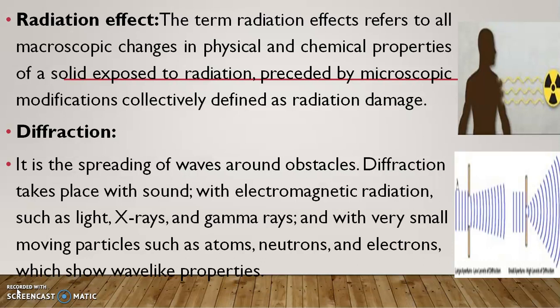The next term is radiation effect. The term radiation effect refers to all macroscopic changes in physical and chemical properties of a solid exposed to radiation, preceded by microscopic modifications, collectively defined as radiation damage. Radiations such as X-rays and gamma rays pass through the body and produce some effects on the chemical and physical properties. What happens after exposing to radiation — that is called the radiation effect.